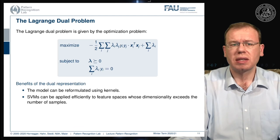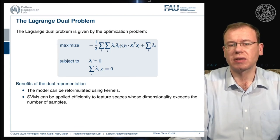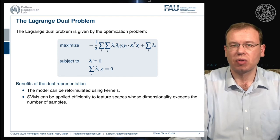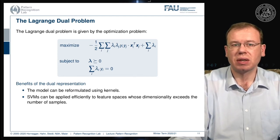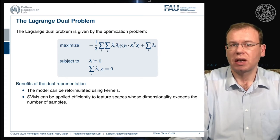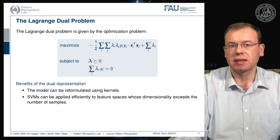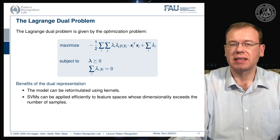This formulation can be reformulated using something called a kernel, because our training data only appears in terms of inner products — specifically xᵢᵀxⱼ, the inner product of two feature vectors. This is very interesting because the actual dimensionality of the feature space does not affect us, since we only need this inner product. We can apply this efficiently in high-dimensional spaces, and if we pre-compute all inner products, the complexity of the training process does not change.